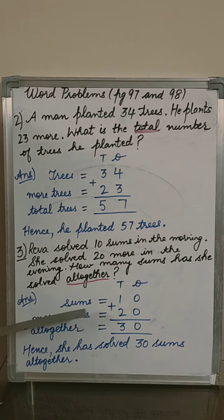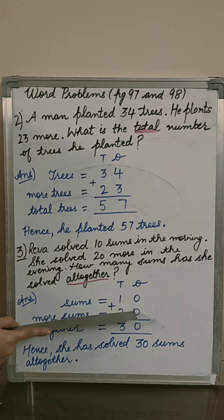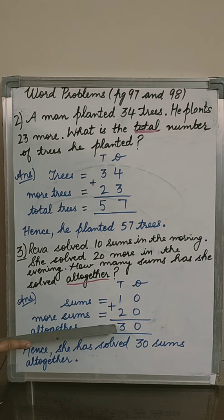Come to the working. Sums 10, more sums 20. Altogether means plus. Ones column, 0 plus 0, it will give 0. 1 plus 2, it will give you 3. Hence, she has solved 30 sums altogether.